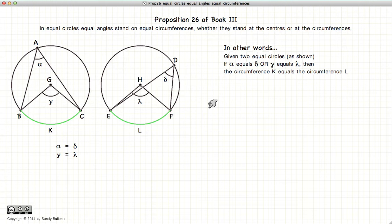which states that if we have two circles which are equal, in this case ABC and DEF, and if we have two angles from the center of the circle, in this case Gamma and Lambda, if Gamma and Lambda are equal, then the circumferences that are subtended by these two angles will also be equal.